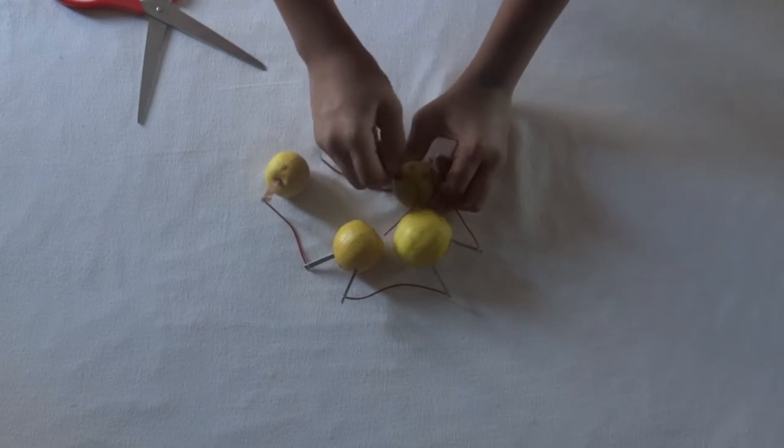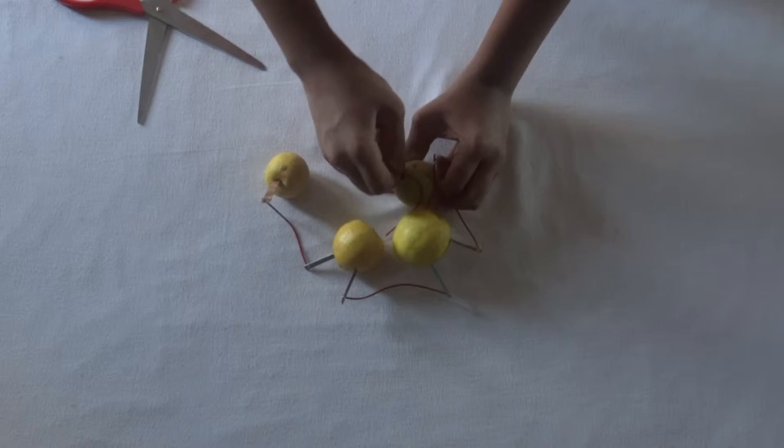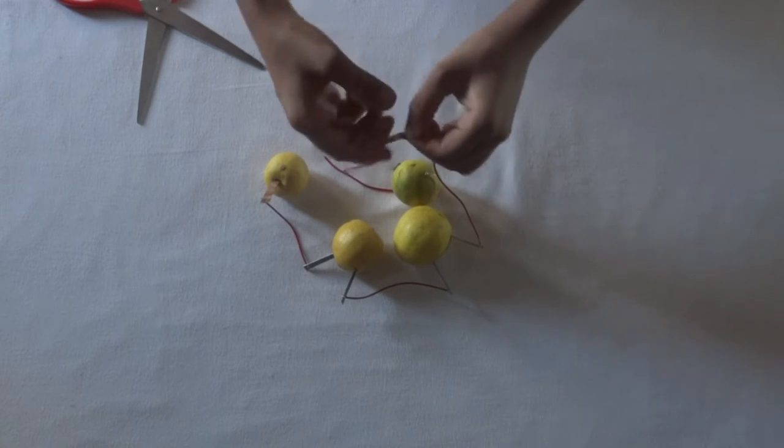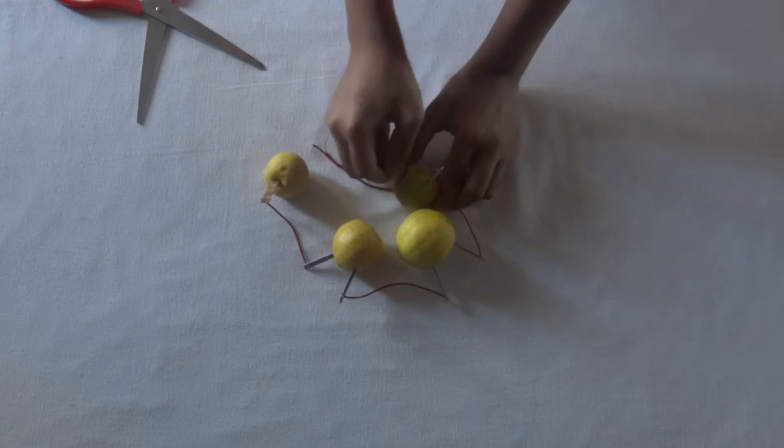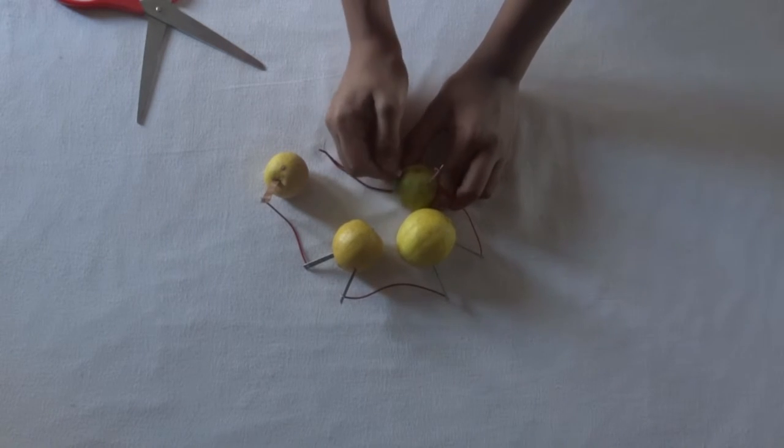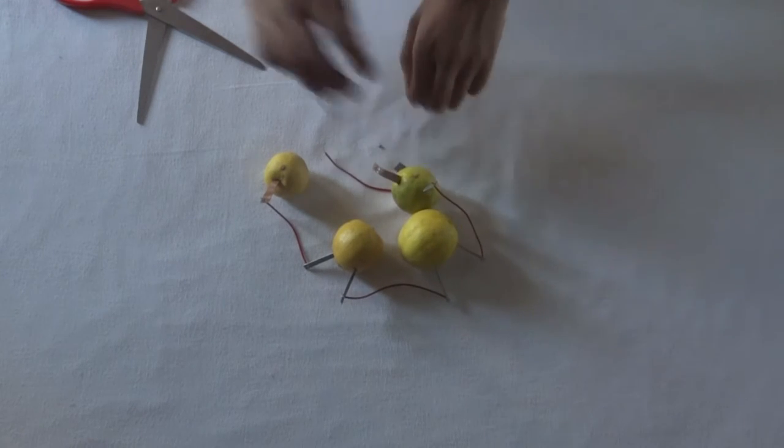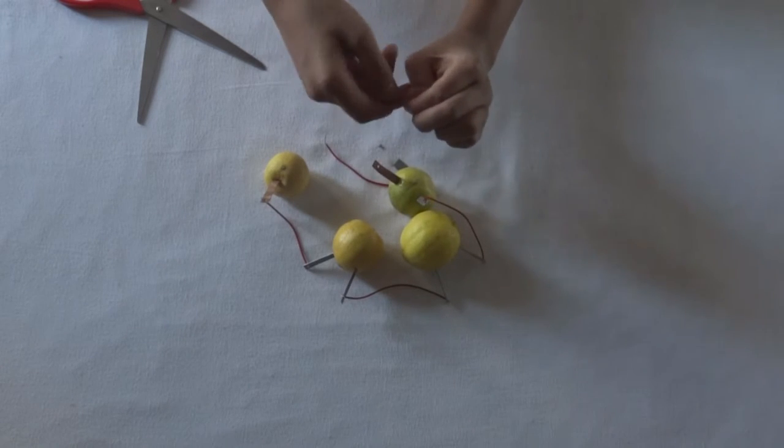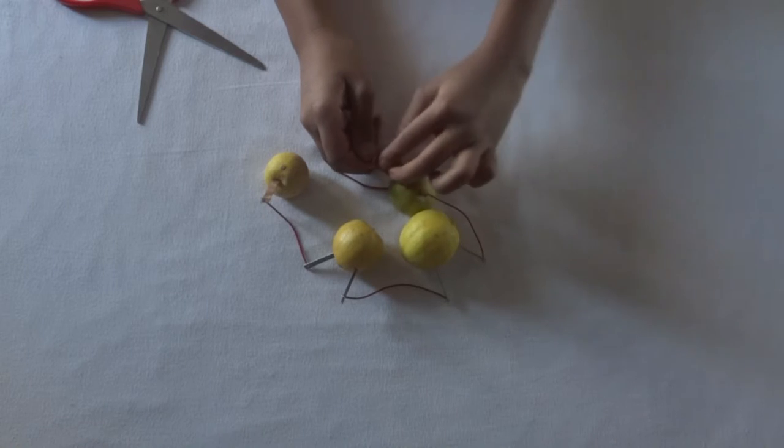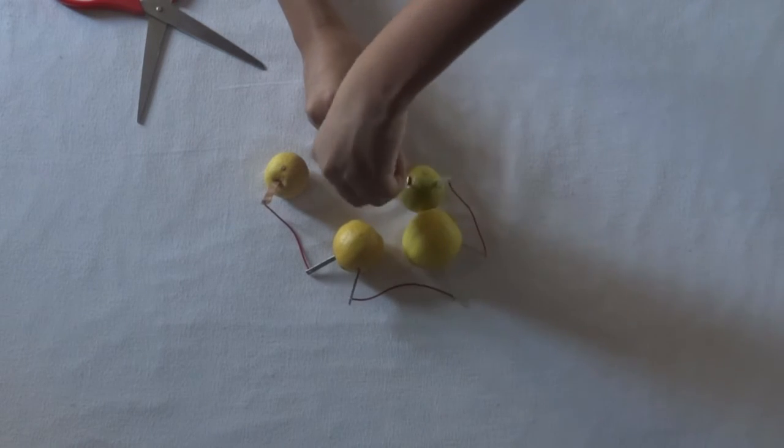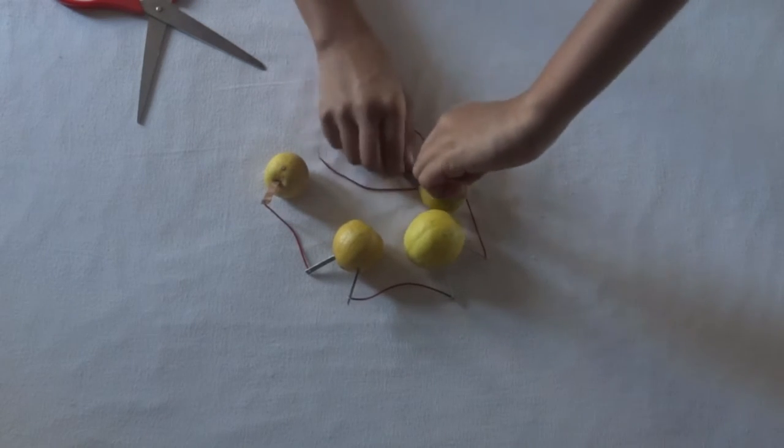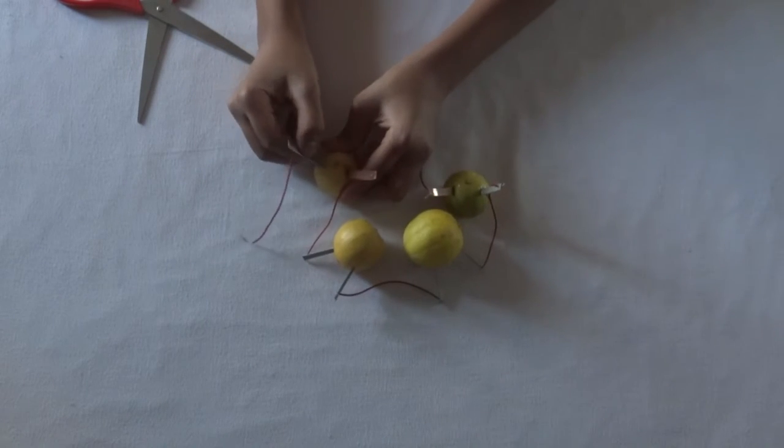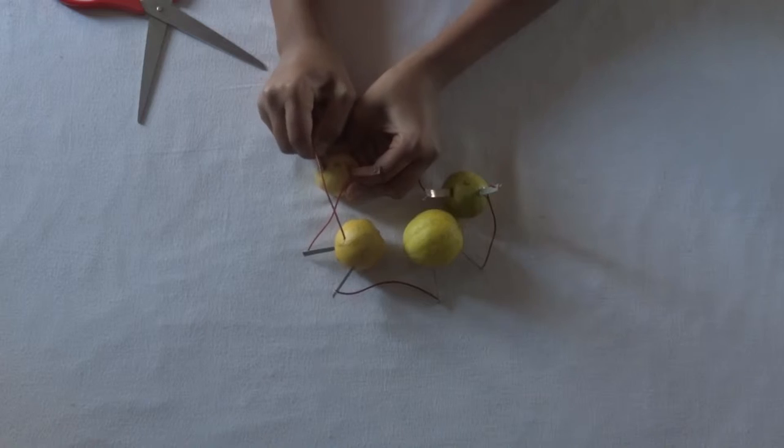We are going to connect them in this manner. As you can see, we have connected one of the zinc strips next to the copper one. Now, we will be connecting the copper one next to the zinc. As you can see, our circuit is complete.